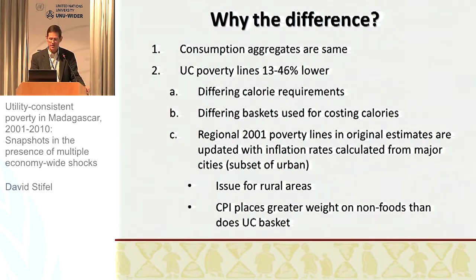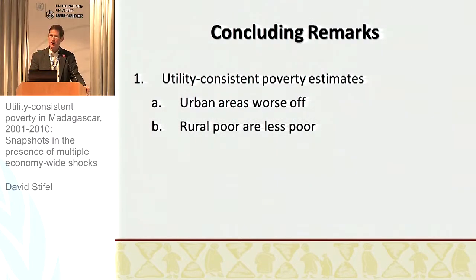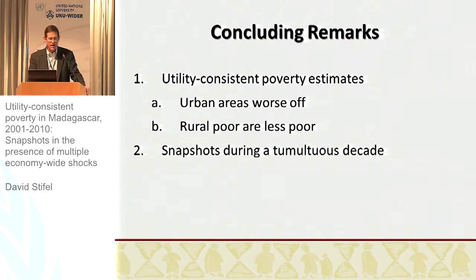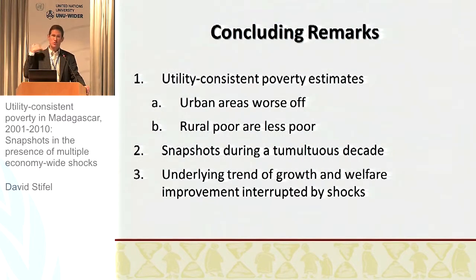Further, the CPI baskets used for inflation place greater weight on non-food items than the utility-consistent basket, suggesting the household survey represents consumption weights differently. The utility-consistent poverty estimates suggest that urban areas are worse off. While a greater percentage of the poor are rural, the rural poor are actually less poor in terms of depth and severity. The snapshots we have are during a tumultuous decade, and the underlying trend of growth and welfare improvements are interrupted by these shocks. We should not necessarily interpret this as a long-term trend, unless Madagascar is repeatedly hit by shocks.